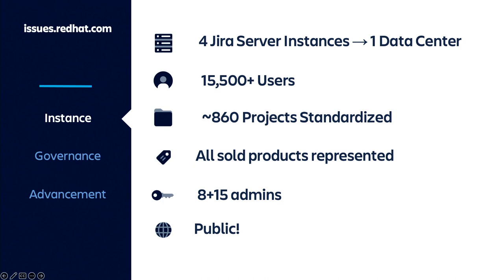So issues.redhat.com is our instance. It was born out of four Jira server instances consolidated down into one data center. It's not as big as Fidelity's, but it's a centerpiece — a critical part of Red Hat's work tracking systems. It's got more than 15,000 users: 10,000 are Red Hat associates and about 5,000 are upstream people because it's a public instance. 850 projects are standardized, around 1,470 are active, and 500-plus are inactive — we just crossed over 2,000 projects total. Every product we sell has its development work tracked there.